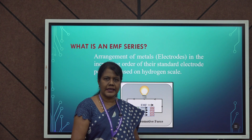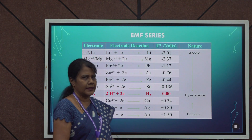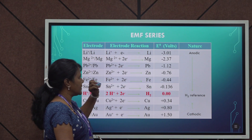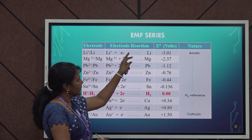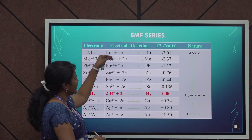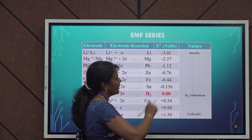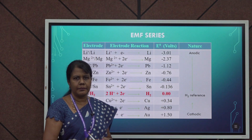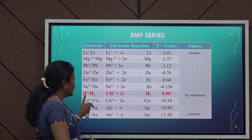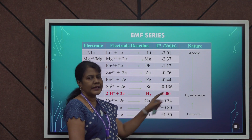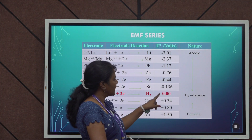Let us see how this EMF series is being constructed. This is the table which represents the EMF series. This table contains the collection of electrodes or metals, followed by the reactions for the corresponding metals. All these reactions are reduction reactions, followed by the standard electrode potential value E° and finally the nature of the metals. Metals will generally be anodic or cathodic. To start with, hydrogen is selected as a standard in this EMF series, and the electrode potential of hydrogen — E° of hydrogen — is 0.